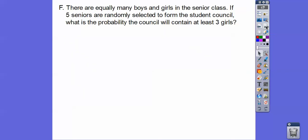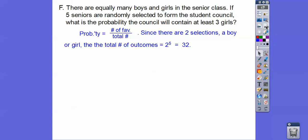One more, you guys, and the bell's going to ring. You've got to hustle. There's equally as many boys as girls in the senior class. If five seniors are randomly selected to form a student council, what's the probability that the council will contain at least three girls? So that means three girls or four girls or five girls.